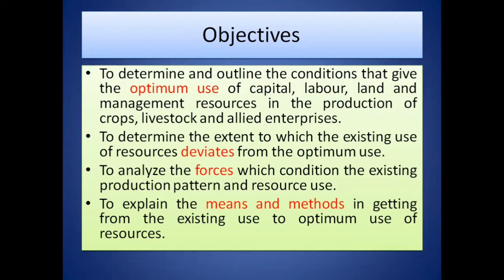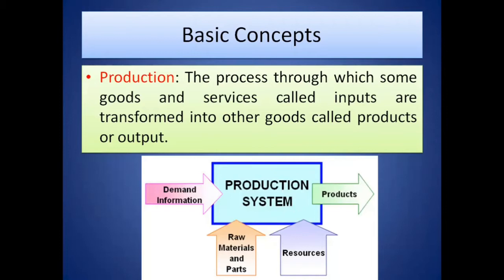Before moving to the three stages of production and different relationships like factor-factor and product-product, we need to know all the basic concepts. First is production: the process through which goods and services called inputs are transformed into other goods called output or product. Using raw materials and resources, we produce the products — all inputs are transformed into output through this process.